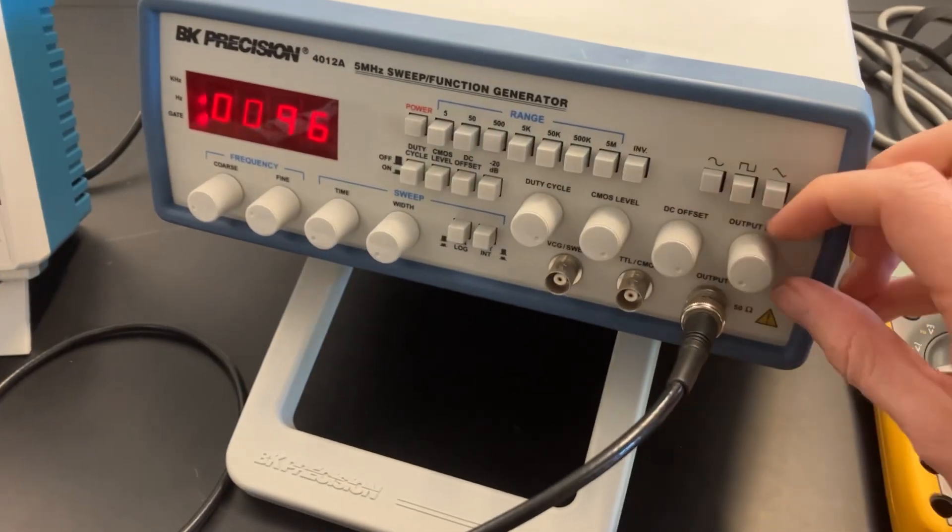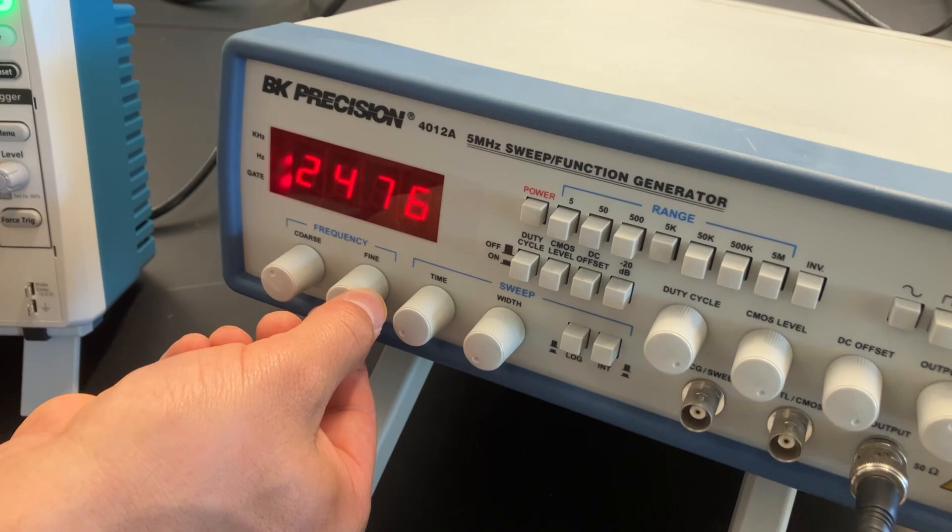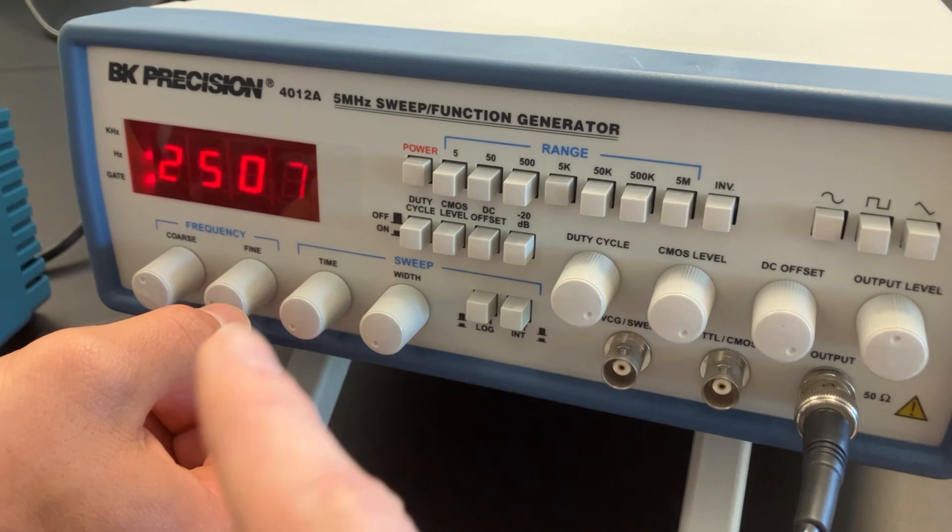We're going to put the output level to about halfway, right around 2,500. Fine-tune it a little bit if you can. These buttons are interesting - we've got the output level, the sine wave selector. We set the range to about 5,000 so that way we could use the coarse and fine knobs to fine-tune this to about 2,500 frequency.